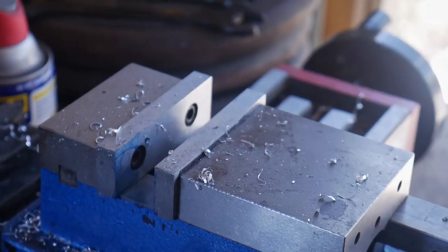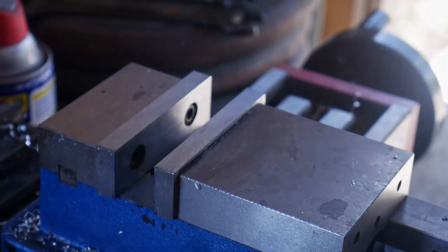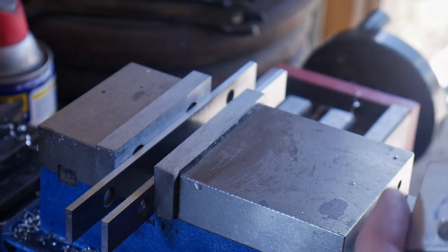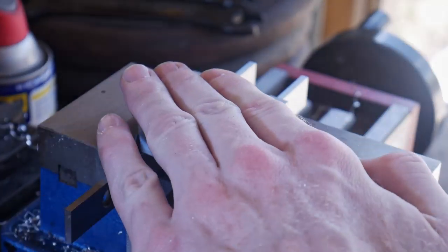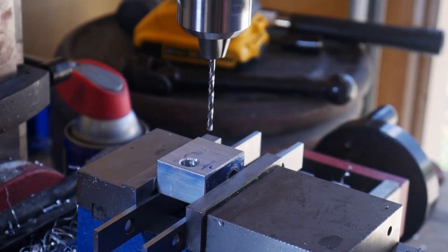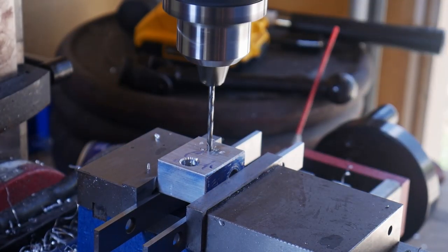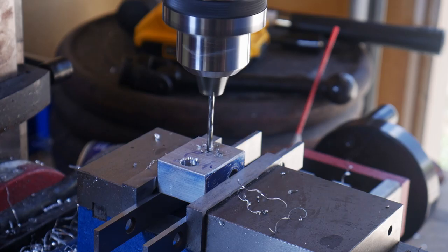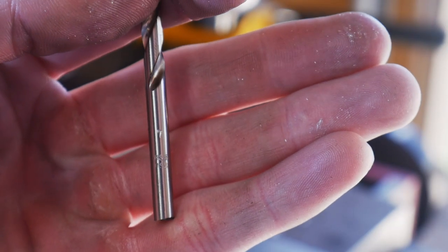The last hole that we'll be drilling is for our set screw. We'll work our way up from an eighth of an inch to a number 7 bit, which is the appropriate size for tapping quarter 20.